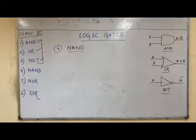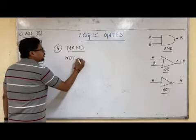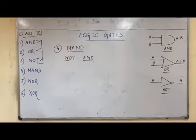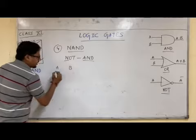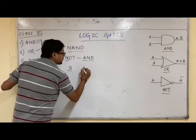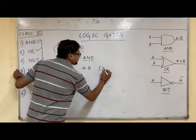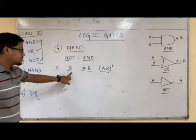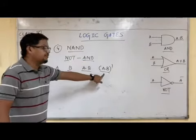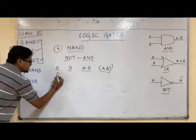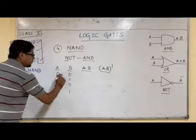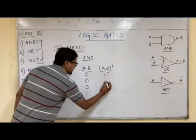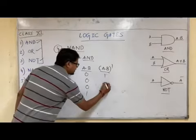The next gate is the NAND gate — it stands for NOT AND. First we perform AND, then we take the NOT (complement) of that result. For two inputs A and B: A·B gives 0,0,0,1 and the NOT of that gives 1,1,1,0. This is the NAND truth table. The circuit diagram is simply the AND gate with a small circle (bubble) placed at the output, making the output A dot B whole complement.